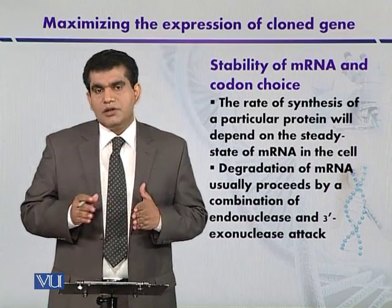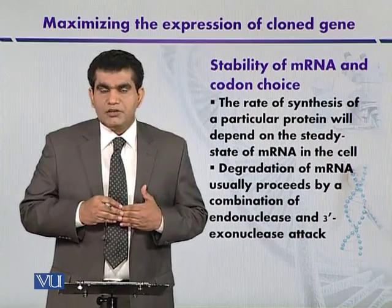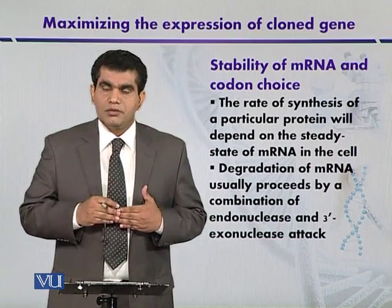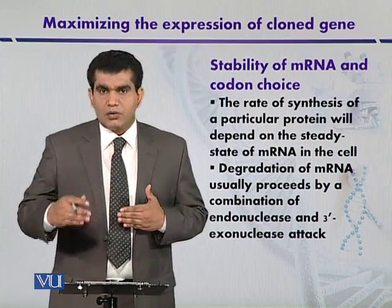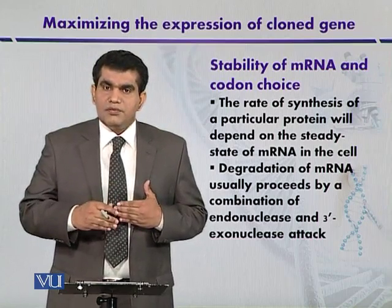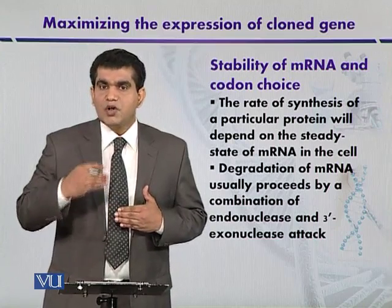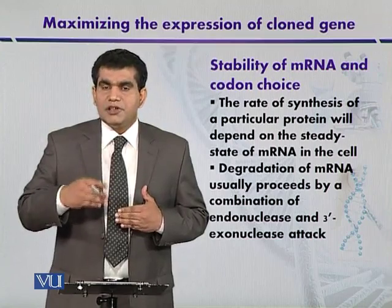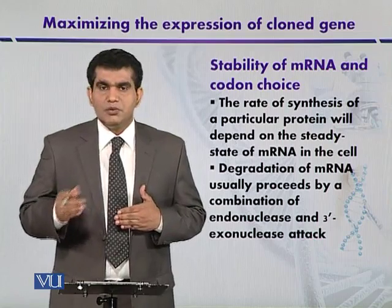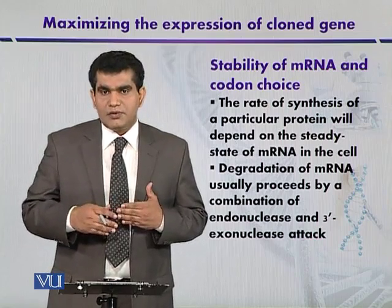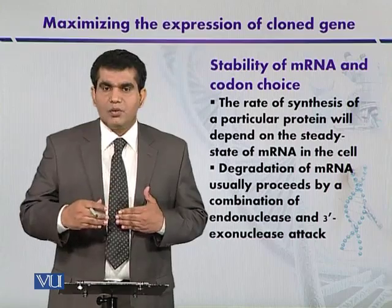This is not only related to the degeneracy of the genetic code and its selectivity for gene expression; stop codons can also determine whether a gene is going to be expressed highly or not. For example, if the stop codon is UAA, then gene expression is relatively high compared to other stop codons like UAG or UGA. So even the stop codon can determine the expression level of the cloned gene.